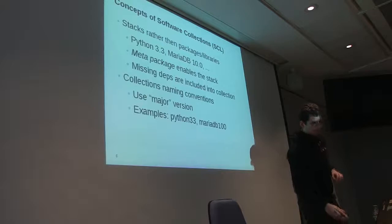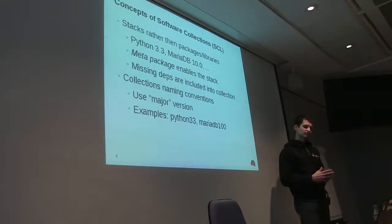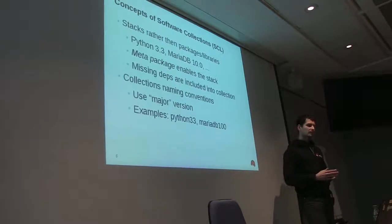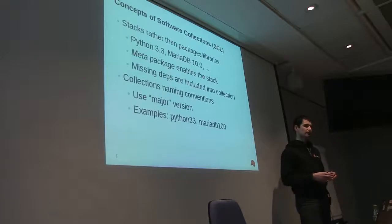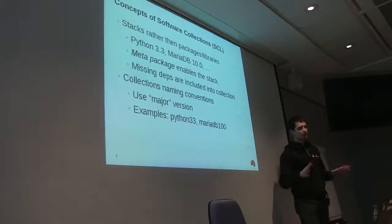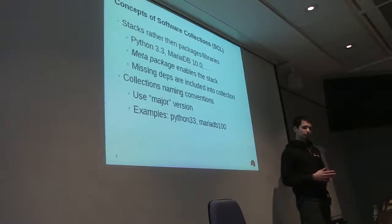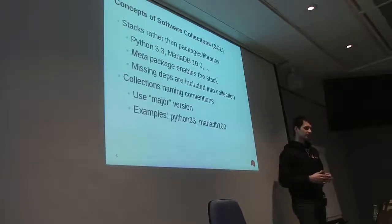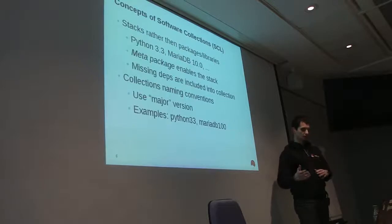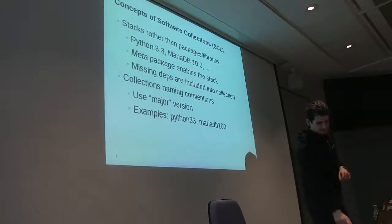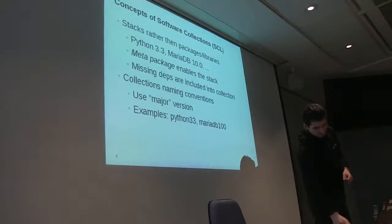The naming convention for software collections is that there is a version in the name which specifies API compatibility. At the database level it's the major version — so MariaDB100 actually means 10.0, with only the decimal point omitted.